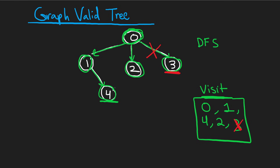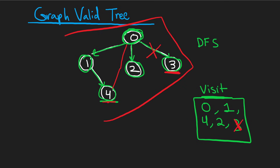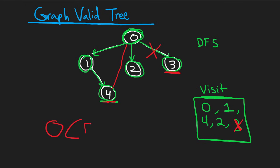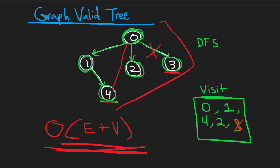Similarly, if there were an additional edge from four to zero, in our DFS we would arrive at zero, check if it's already in our visit set — yes it is — so we'd detect a loop and return false immediately. That's the main idea of the algorithm. The time complexity is O(E + V) since we traverse each node and each edge at most once, and the memory complexity is also O(E + V) because of the recursion stack and the adjacency list. It'll be pretty clear once I show you the code.